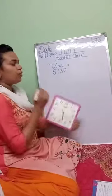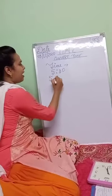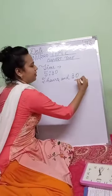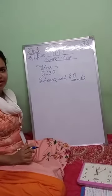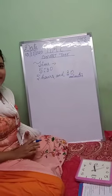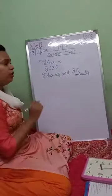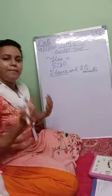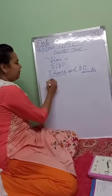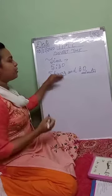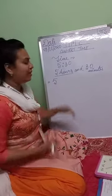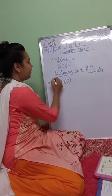Five thirty can also be written as five hours and thirty minutes. Now, if I want to know how much five hours and thirty minutes is in total minutes, I have to convert five hours into minutes. To convert hours into minutes, remember: one hour equals sixty minutes, so this becomes five into sixty minutes.